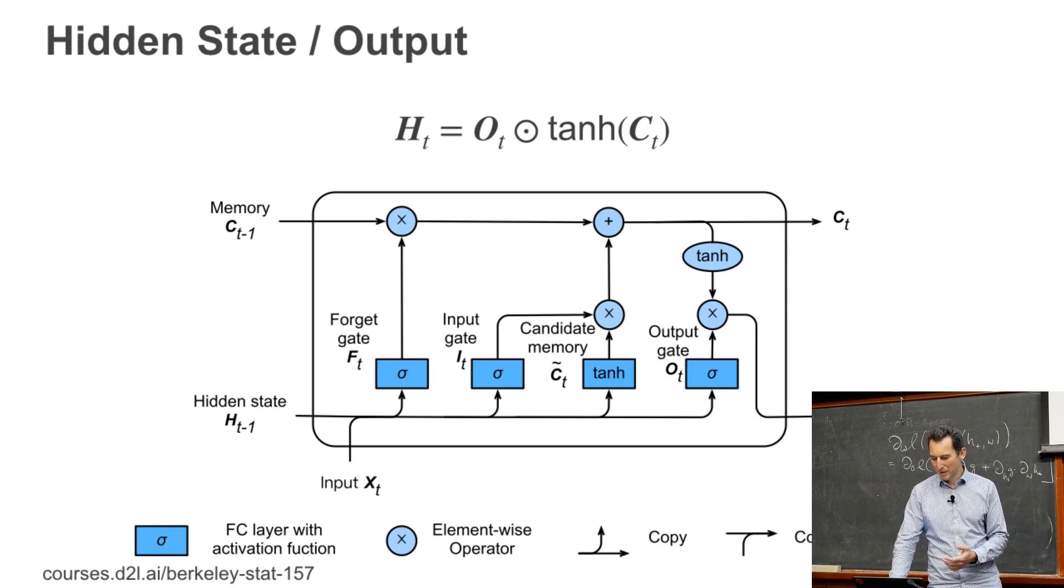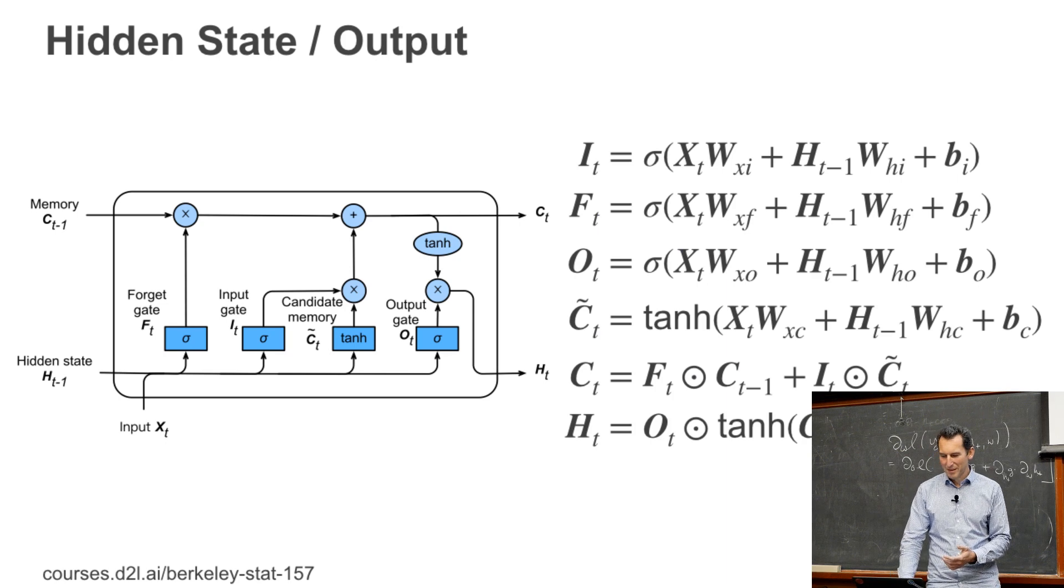So this was probably a little bit long-winded and complex. Here's the entire thing in its full glory. So I have three gates, I, F, and O. So input, forget, and output. I have candidate memory, c tilde. I have the actual memory, c. And then I have the output that's just some function of the memory.